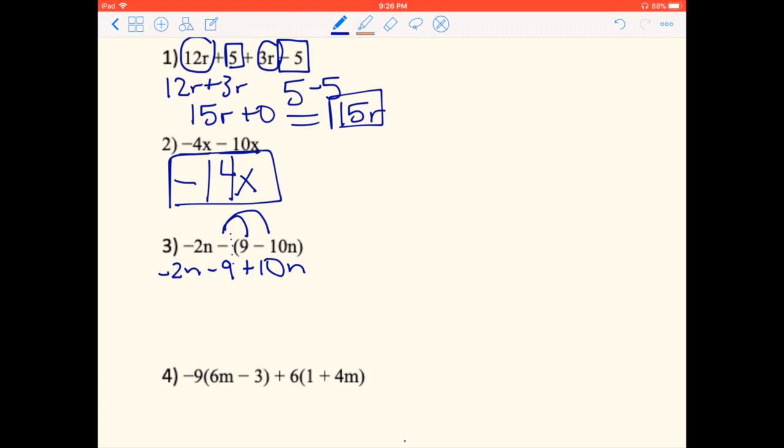Now looking at this, we have negative 2Ns and 10Ns, and then we have negative 9. So I'm going to combine my like terms. What I have underlined is negative 2N plus 10N. So negative 2 plus 10 will give me 8Ns, and then that negative 9, we have nothing we can combine with that, so I'm just going to add it right to the end. So 8N minus 9 is our answer.